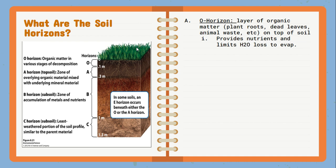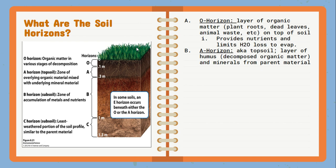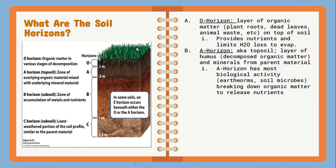Below the O-horizon is the topsoil, known as the A-horizon. This is more humus — more of that decomposed matter. A lot of the dead animals, waste, and leaves have now fully decomposed and returned back into the soil. This is where we see some minerals from parent material too, so it's like a mixture of the two. The A-horizon has the most biological activity — this is where we see microbes and earthworms, which further break down any organic matter from the O-horizon.